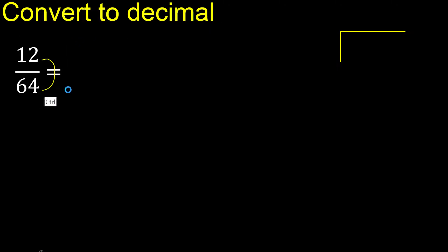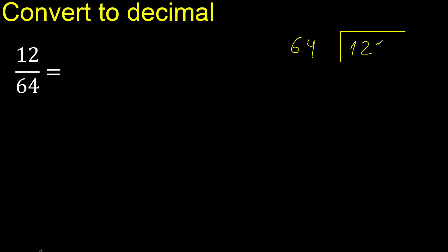12 divided by 64. 12 is less, therefore complete — always complete with 0.